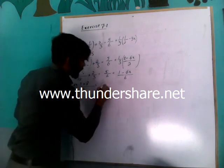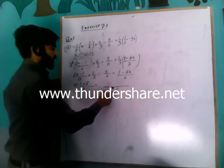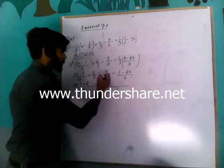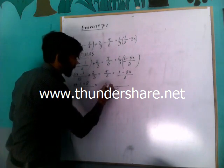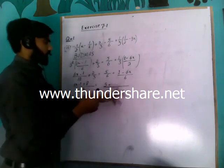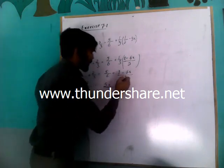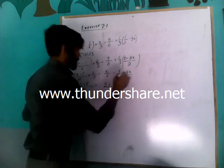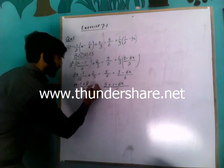On the right-hand side, LCM is 6. 6 divided by the denominator of the first term — 6 divided by 6 gives 1. 1 multiplied by 5 gives 5. Plus 6 divided by the denominator of the second term gives 1, and 1 multiplied by the numerator 1 gives 1. So we have 1 minus 6x. Now we will do cross multiplication.